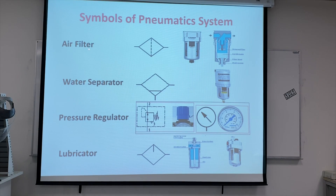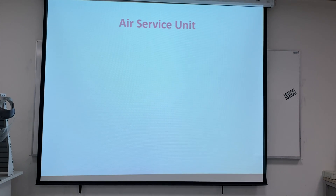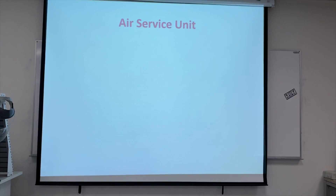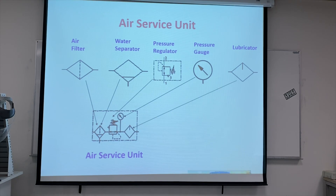As explained, in the air service unit we have an air filter with its symbol, a water separator with its symbol, and a pressure regulator with its symbol — it has an on/off gate. We also have a lubricator, which lubricates components to make movement easier. All these components together make up what we call the air service unit.